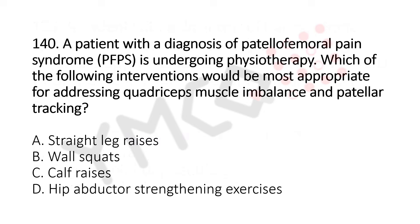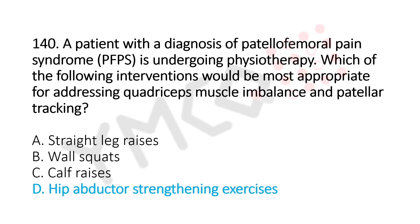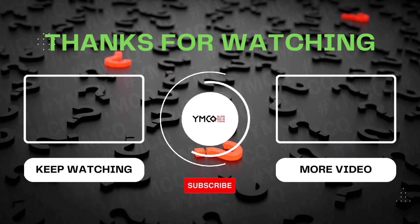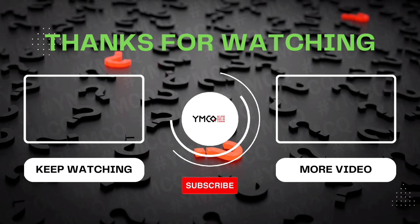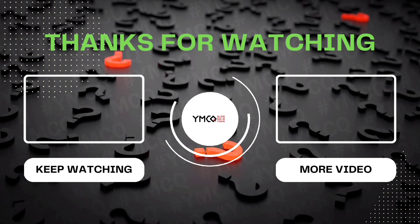Which of the following interventions would be the most appropriate for addressing core muscle imbalance and patellar tracking? Option A: straight leg raise. Option B: wall squat. Option C: calf raise. Option D: hip abductor strengthening exercises. The answer is option D: hip abductor strengthening exercises. That's all for today. If you have any doubts, please mention in the comment box. See you in the next part, that's part 8. Till then, bye bye, take care.